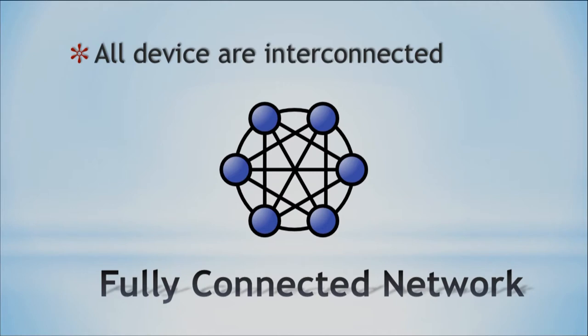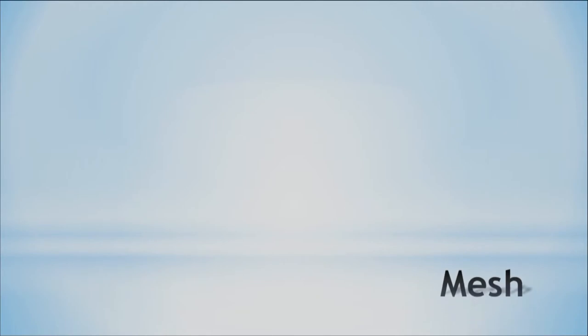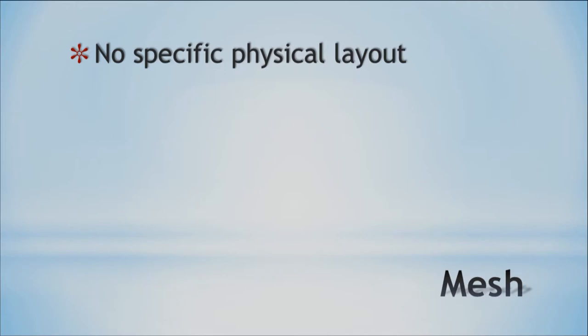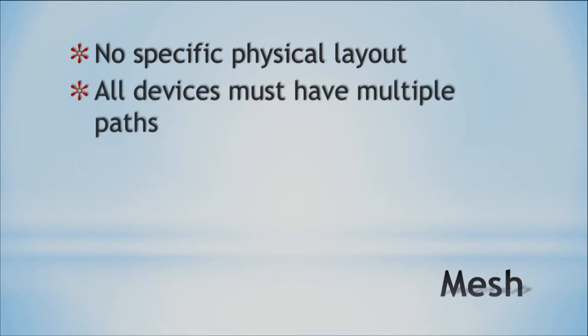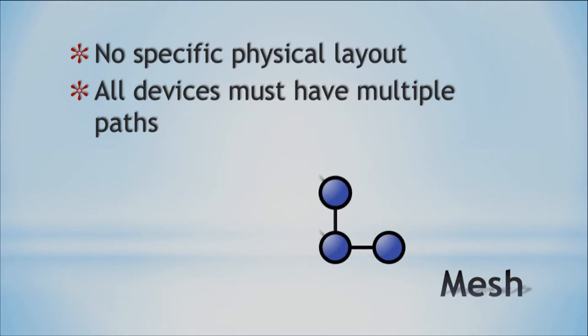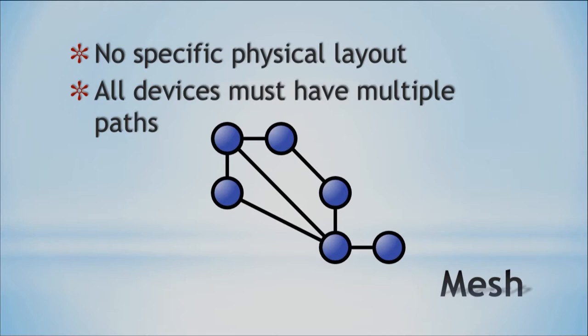Another topology available to us is the mesh network. Basically, this doesn't follow any specific physical layout — it just requires that all devices have multiple paths. You can see that all the devices have multiple paths they can use to send and receive data. That's why we call it a mesh: you have multiple ways of sending and receiving data. If one of those lines went down, you'd lose connectivity, so having these multiple paths provides alternate data paths and redundancy within our network.